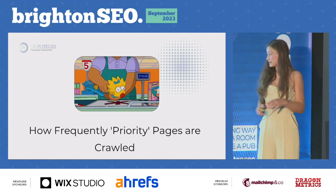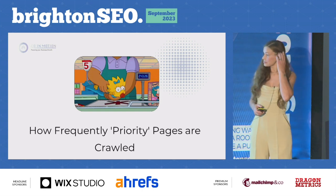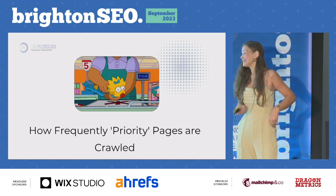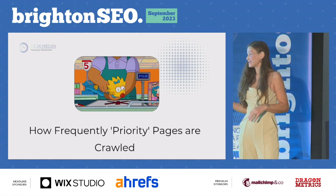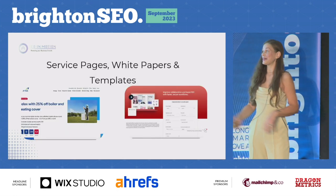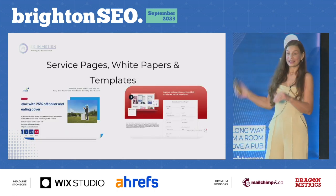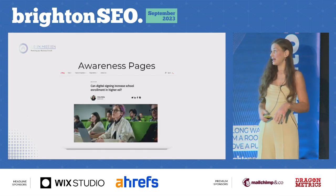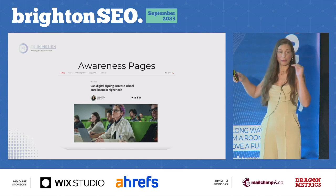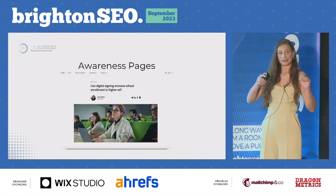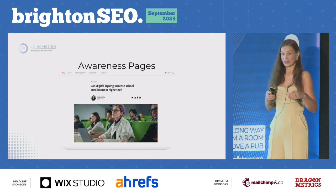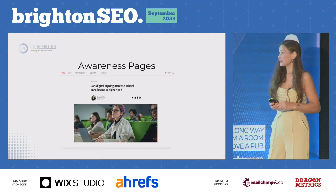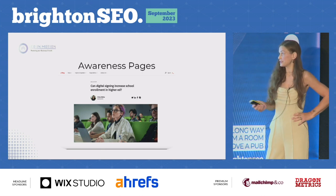We can also look at how frequently priority pages are crawled. In terms of priority pages, we're talking about your transaction pages, your lead generation pages, your middle-of-the-funnel pages, right down to those awareness pages — top of the funnel — where we're targeting users who aren't aware of the solution to their problem yet. It's important to map all of these when thinking about the most important pages on the website.